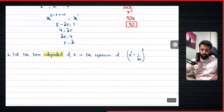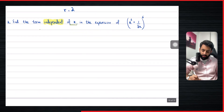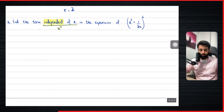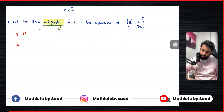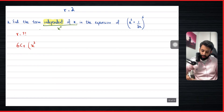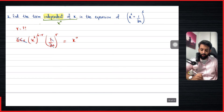Now there is another example. This one says: find the term independent of x. Remember — the term independent of x means x to the power 0, because x^0 equals 1, effectively removing x. The objective again is to find the value of r. Without knowing r, the general term is: 6Cr · (x²)^(6−r) · (1/2x)^r, and we want this to equal x to the power 0. We ignore 6Cr, the 1, and the 2, keeping only the x terms.